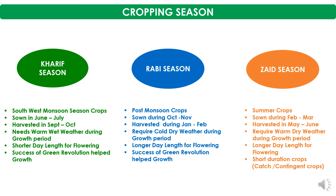Catch crops are harvestable or usable at any time of their field duration and adaptable to the season, soil, and management practices. These catch crops or contingent crops provide feed, check weed growth, conserve soil, utilize added fertilizer and moisture. Examples of catch crops or contingent crops are green gram, black gram, cowpea, onion, coriander, and bajra.